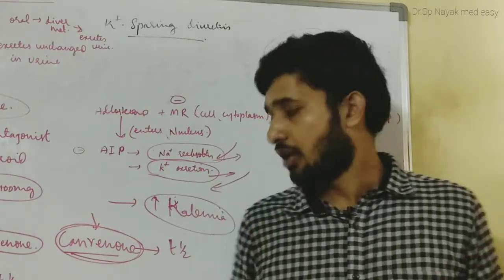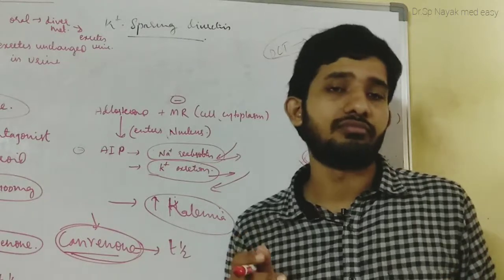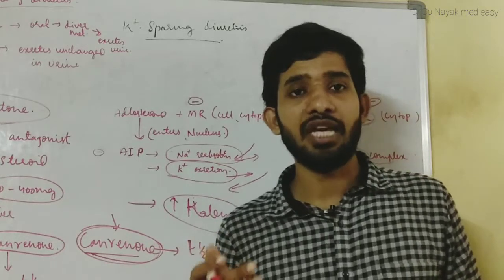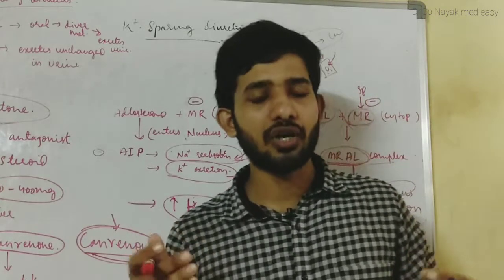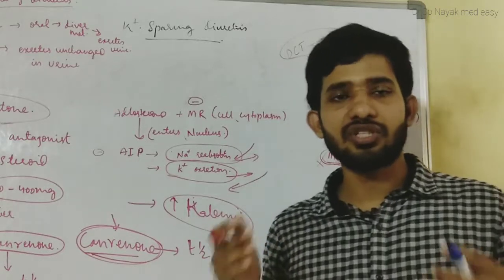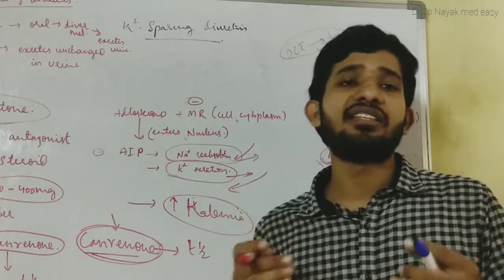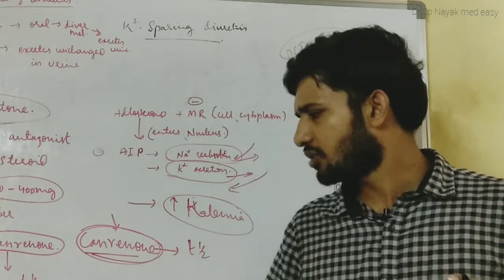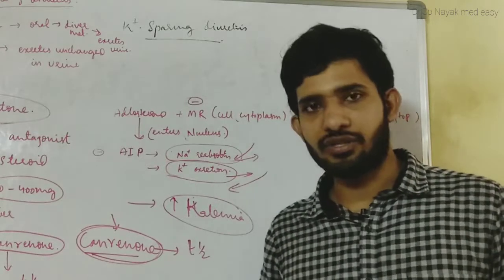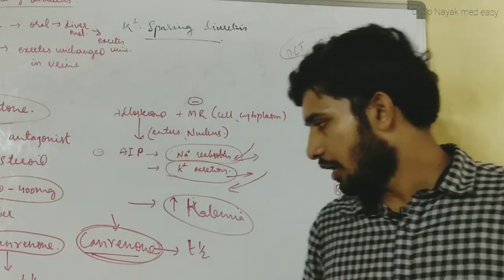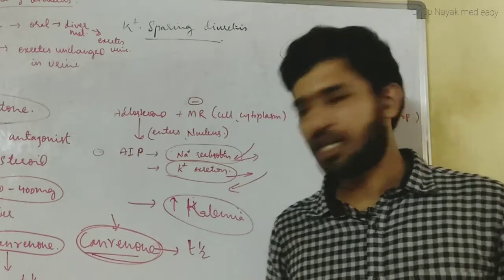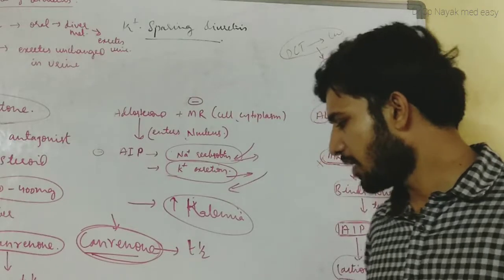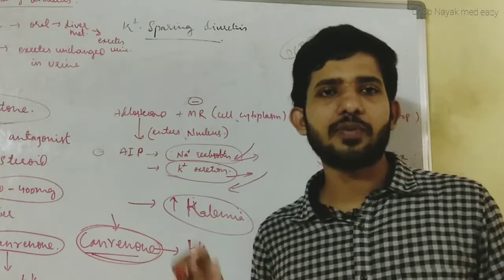Spironolactone is also indicated in hyperaldosteronism. Excess synthesis of mineralocorticoid is associated with Conn's syndrome — remember that excess synthesis of cortisol is called Cushing's syndrome. In Conn's syndrome we prescribe the aldosterone antagonist spironolactone. It is also indicated in congestive cardiac failure, severe hypokalemia, and hepatic cirrhosis with edema.